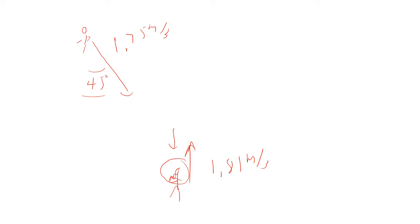So we look at this problem and say, okay, so this velocity right here is 1.8 meters per second j. This velocity up here is going to be 1.75 meters per second sine 45 degrees i,